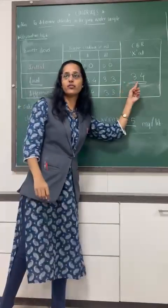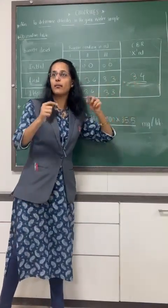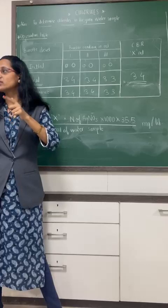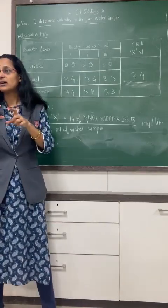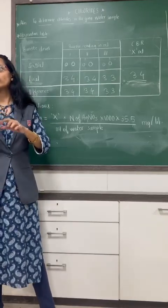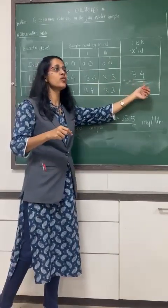So what is 3.4? 3.4 ml of AgNO3 is used by the chloride ions which are present in the water.